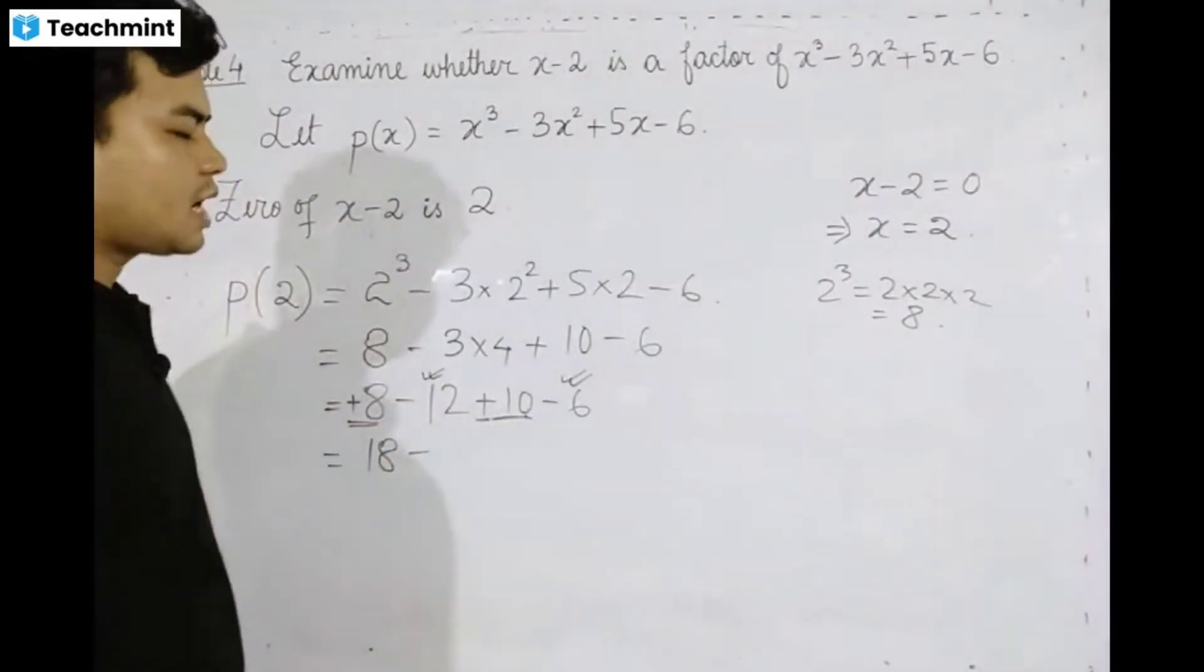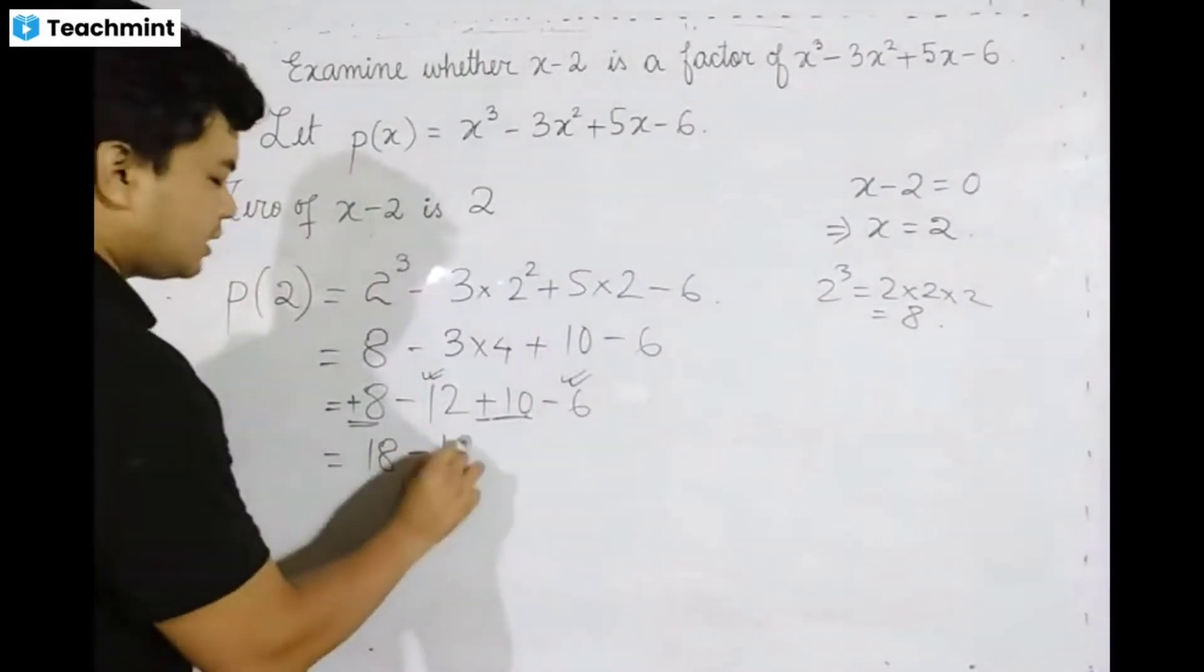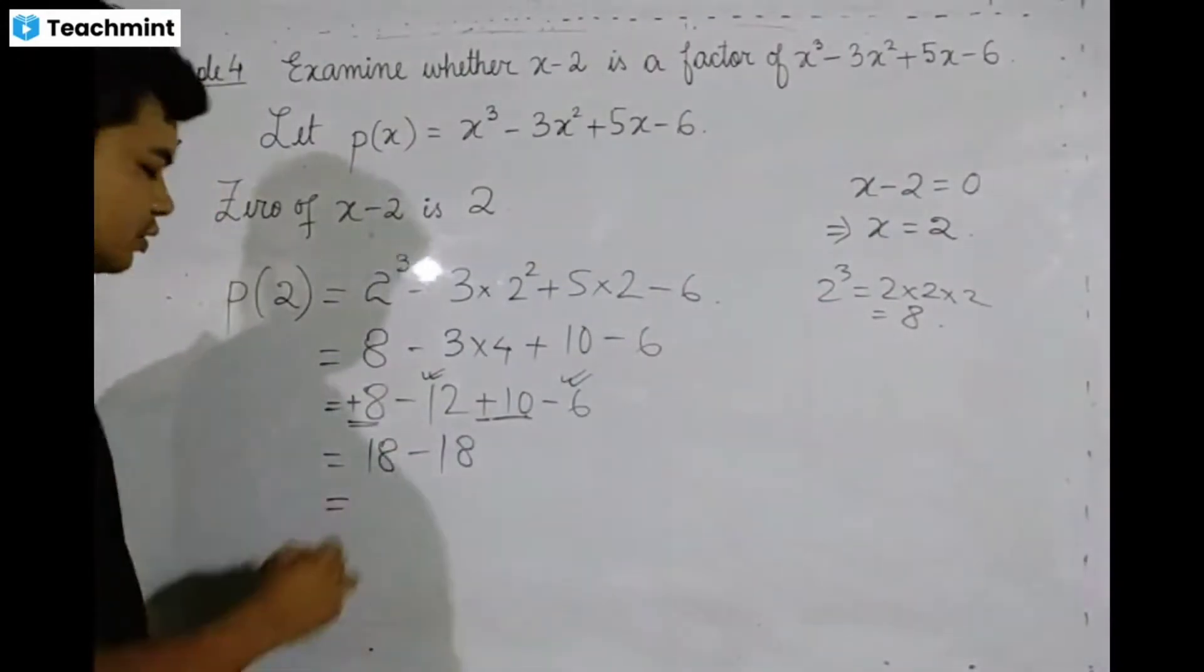12 to 16, what is it? 12 to 16, what is it? So it's 18. 18 minus 18 is 0.